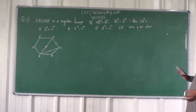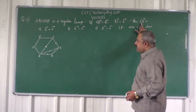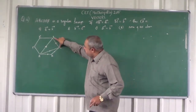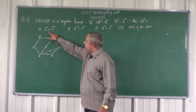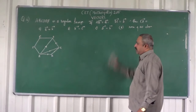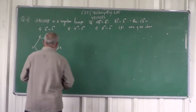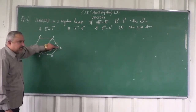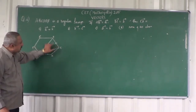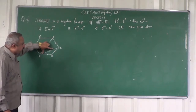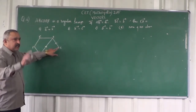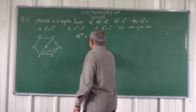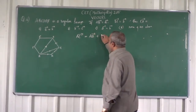Now first look at the problem — what is it that you are required to find? You want vector CD. In order to get the value of vector CD, first I will take the value of vector AC. Vector AC equals vector AB plus vector BC.